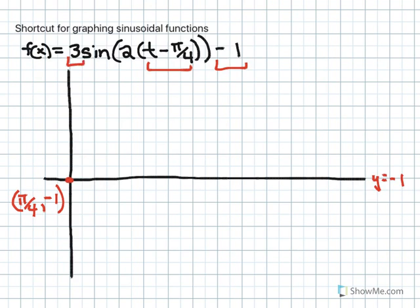Then we focus on the amplitude. It's 3. That means the max will be 3 units above the axis of symmetry, and the min will be 3 units below. So I know I'm going as low as -4, because that's 3 units below -1, and I know I'm going as high as 2, 3 units above.